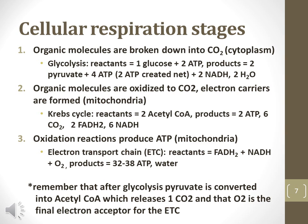Glucose, a 6-carbon containing monosaccharide, is broken down to form two pyruvate molecules, a 3-carbon monosaccharide, in the cytoplasm. The process that takes place in the cytoplasm is called glycolysis. The pyruvate molecules are transported into the mitochondria, where they are converted to acetyl-coenzyme A, also called acetyl-CoA, and oxidized to form carbon dioxide and water. Two processes take place in the mitochondria: the Krebs cycle and the electron transport chain.